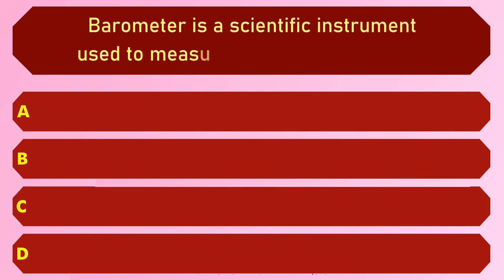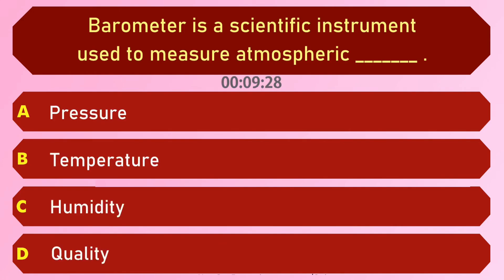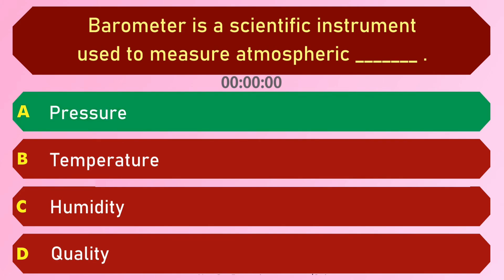A barometer is a scientific instrument used to measure atmospheric — options are: A) Pressure, B) Temperature, C) Humidity, and D) Quality. The answer is option A, Pressure.